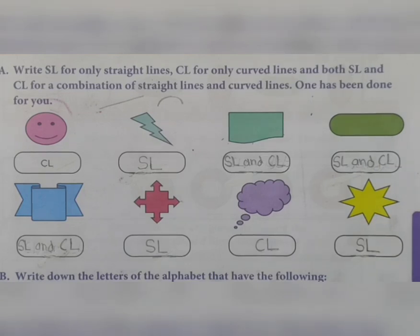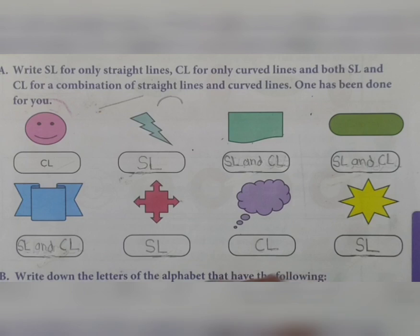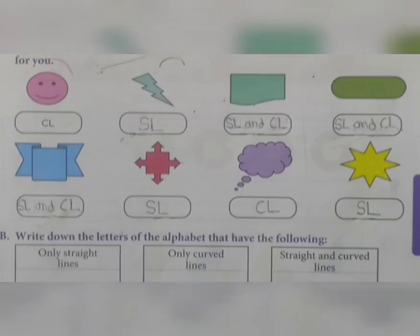In your daily life you can observe that your notebooks are made up of straight lines. A square box is made of straight lines, and a circular shape is made of curved lines. In your kitchen you can observe and say to your mommy that a plate is circular - curved line se bana hua hai. So you can apply this to real life objects.